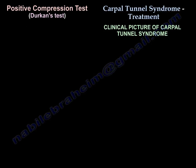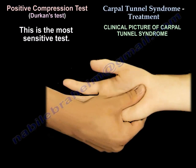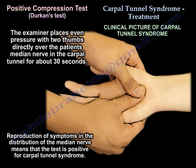Positive Compression Test — Durkan's Test. This is the most sensitive test. The examiner places even pressure with two thumbs directly over the patient's median nerve in the Carpal Tunnel for about 30 seconds. Reproduction of symptoms in the distribution of the median nerve means that the test is positive for Carpal Tunnel Syndrome.